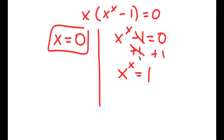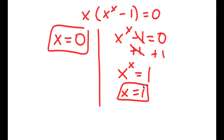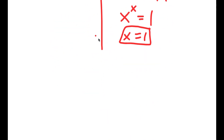Now, x has to be the same number, so what number to the power of itself is equal to 1? That's going to be 1, because 1 to the power of 1 equals 1 — so x is equal to 1. There's no other number that when you take the power of itself equals 1, meaning x equals 1 is the only solution to this equation.